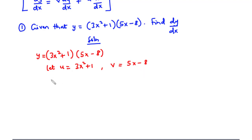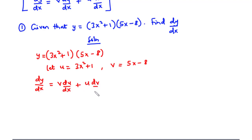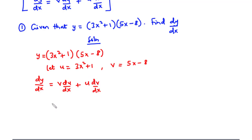We know from the product rule that dy/dx equals v times du/dx plus u times dv/dx. Now we have the expressions for u and v respectively, so we need to find du/dx and dv/dx, and that is exactly what we are going to do.